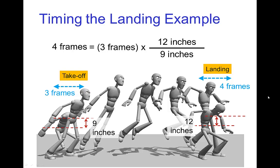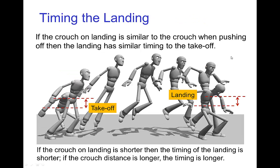The mathematics is not as important as the concept: if the crouch on landing is similar to the crouch when pushing off at takeoff, then the timing of the landing is going to be similar to the timing of the takeoff. If the crouch on landing is shorter, the timing is shorter and quicker. If the crouch distance on landing is longer, the timing is longer. To make the landing look believable and consistent with the takeoff, a deeper landing crouch should have a few more frames than the takeoff timing.